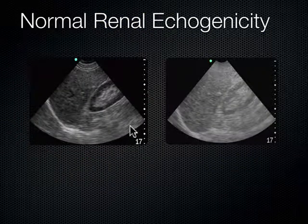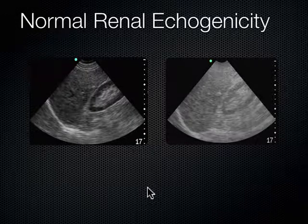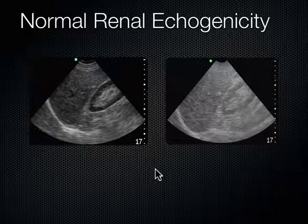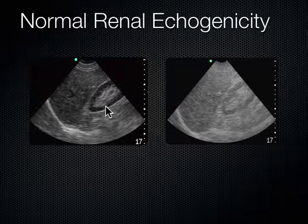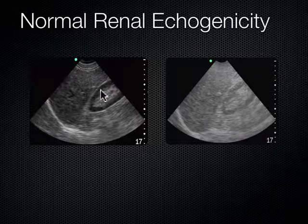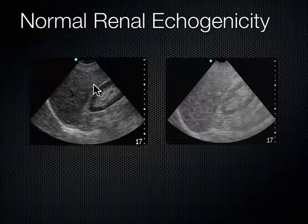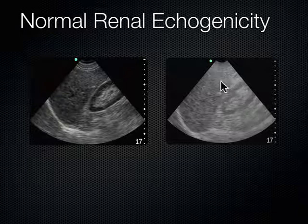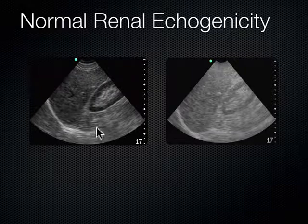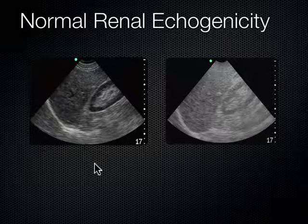Looking at these two images — they have the same depth, ranging down to 17 centimeters — but the right image is over-gained, pretty washed out. The left image shows the cortex of the kidney as slightly darker than the liver, which is correct. If you can make out that subtlety, your gain is adjusted just right. Over here when over-gained, it's hard to tell the cortex is less echogenic than the liver. I know I've got my gain set right when the kidney's cortex looks darker than the liver or spleen.